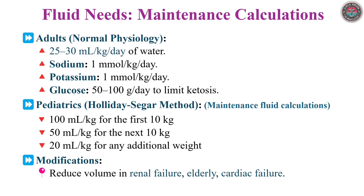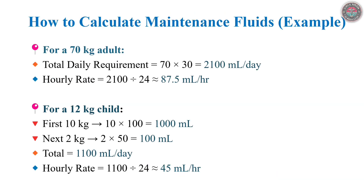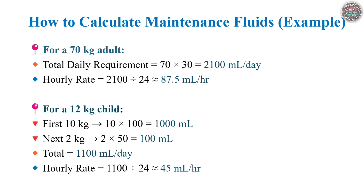Consider a 70 kg adult: 70 multiplied by 30 ml per kilogram yields 2,100 ml daily, or approximately 87 ml per hour. For a 12 kg child: 10 kg at 100 ml/kg equals 1,000 ml, plus 2 kg at 50 ml/kg for 100 ml, totaling 1,100 ml daily, or 45 ml hourly. These calculations are frameworks — clinical judgment must guide final decisions.